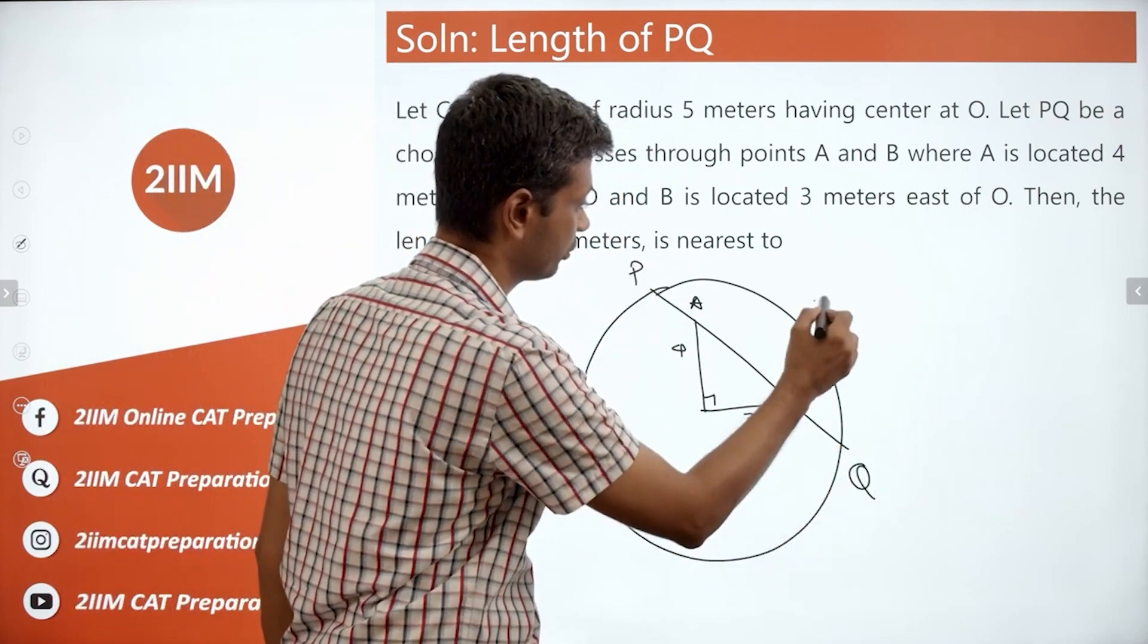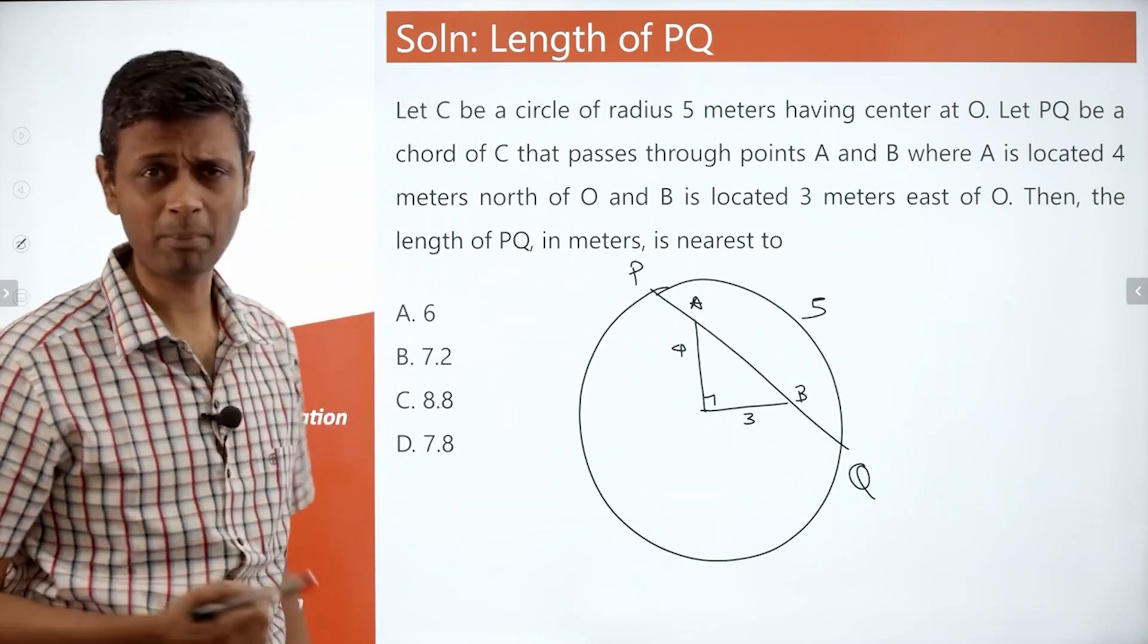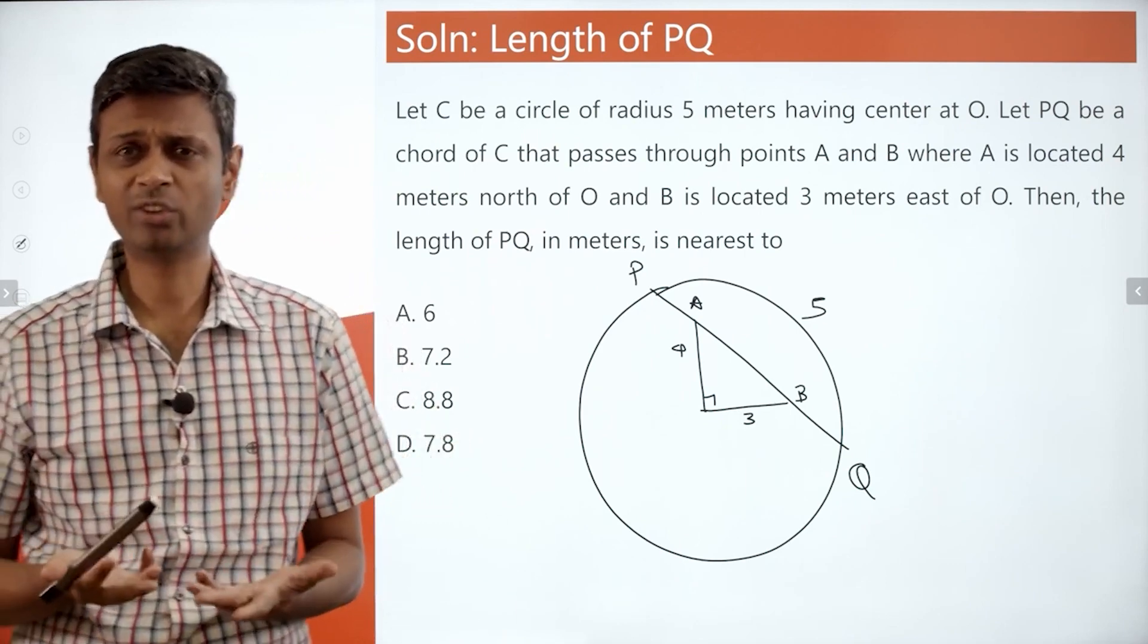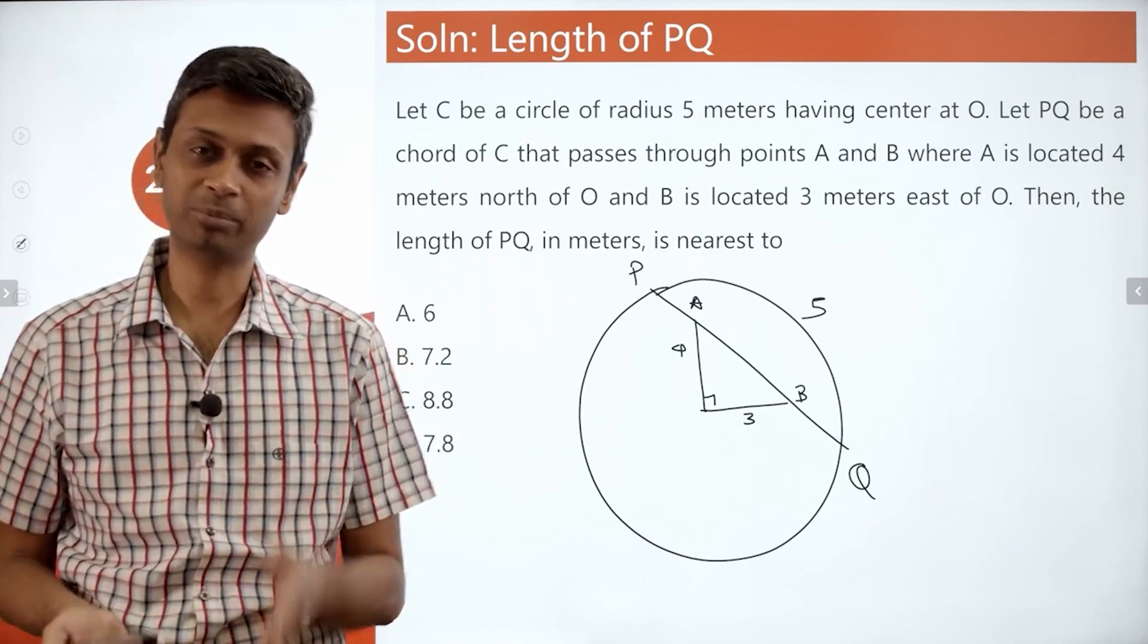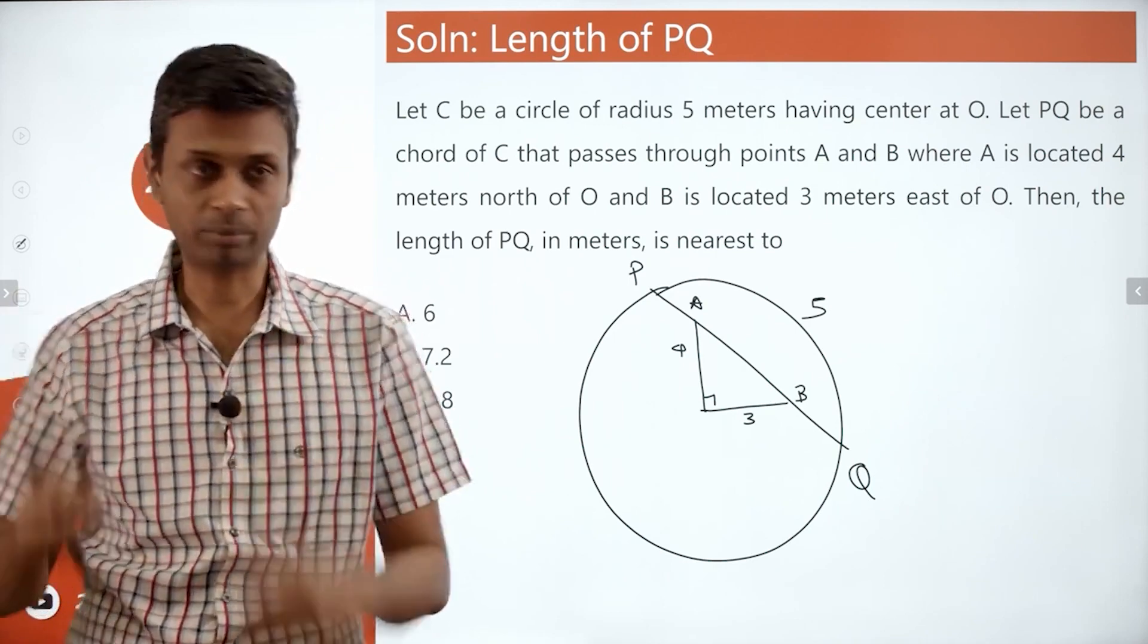Radius of this circle is 5 meters. Lovely. We need to find PQ. How do we do that? We need to have some mechanism. Anytime you're dealing with a chord and a circle, it's always good to draw the line from center of the circle to midpoint of the chord. That will be perpendicular to the chord and then work from there.